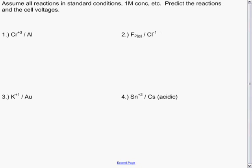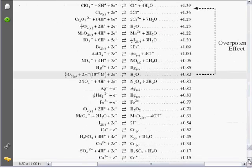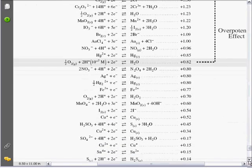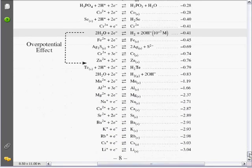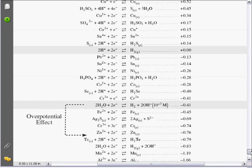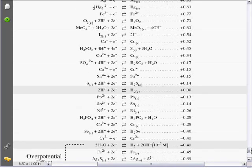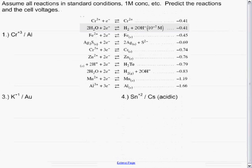For the chromium-aluminum, you'll need your data table. Chromium and aluminum, you'll find on the table here and here.